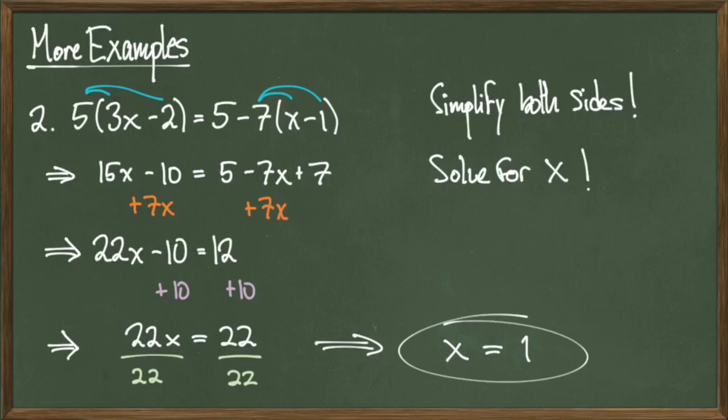Earlier, when I looked at the equation 15x minus 10 equals 5 minus 7x plus 7, I could have subtracted 15x from both sides instead of adding 7x to both sides. Either way, I would have landed at the exact same solution. As an exercise, start from that second line and subtract 15x from both sides instead of adding 7x — going through the steps, you'll see that you still get a solution of x equals 1.